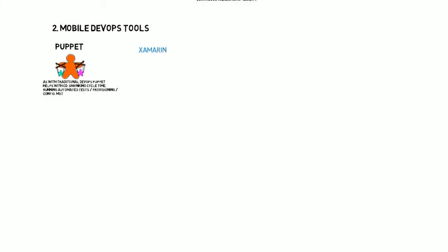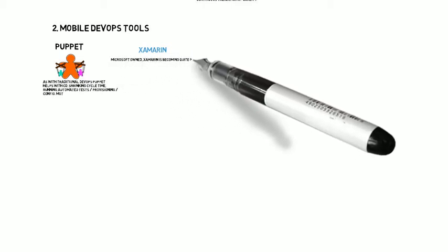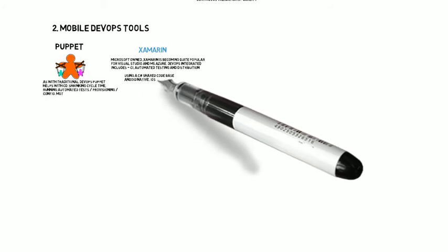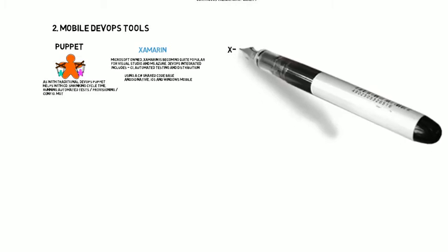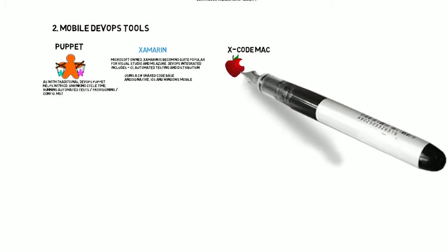Next is Xamarin, which is now owned by Microsoft — purchased in 2016. Xamarin is becoming quite popular for Visual Studio and MS Azure development, with DevOps integrated into the environment for mobile development. It includes continuous integration, automated testing, and distribution all built in. Using a C-sharp shared code base, Android native, iOS, and Windows Mobile are all available.